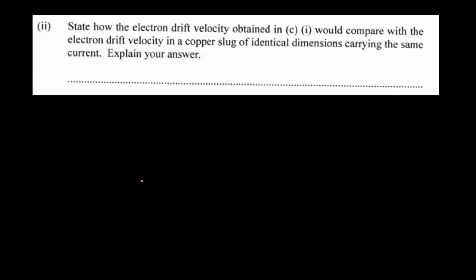We have to look at the fact that they said a copper sludge, which would imply to us that the copper is in more of a liquid format — more of a molten type of copper. We know that when metals change their state, that in itself can affect the rate at which electrons move.